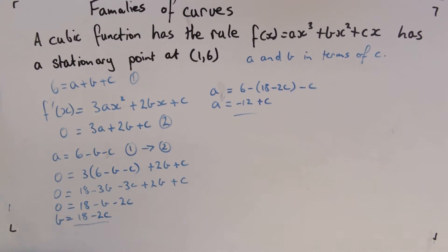The next part of this is then they ask us find the value of c for which a graph has a stationary point at x = 2. So we want to now have a look at this and go, well, I've got values for a and b now.